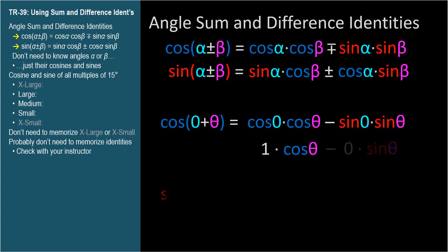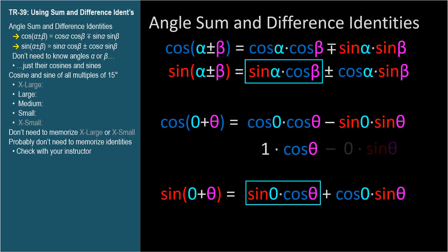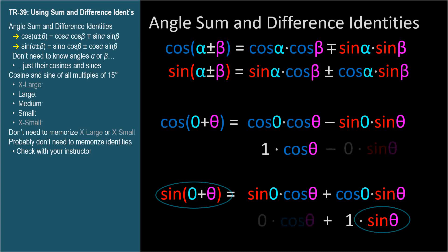And here's the equation for sine zero plus theta. The sine of zero is zero, and the cosine of zero is 1. The left term becomes zero, leaving us with sine theta, which is what we expected.